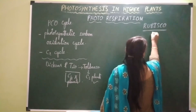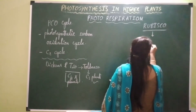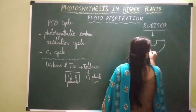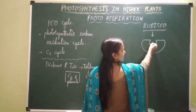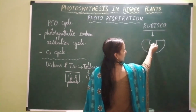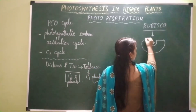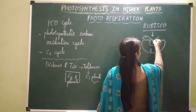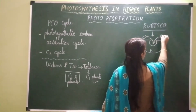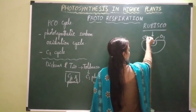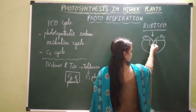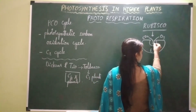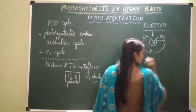Rubisco enzyme consists of an active site. Into this active site, either carbon dioxide or oxygen can bind. If carbon dioxide binds, it functions as carboxylase. If oxygen binds, it functions as oxygenase.